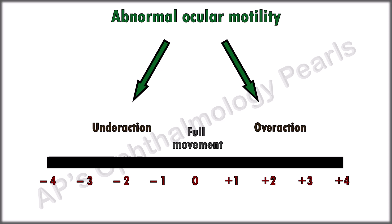Minus 1, 2, and 3 refer to 25, 50, and 75% of under action respectively, and minus 4 means that the eye cannot move past the midline. The plus numbers refer to similar percentages of over action.